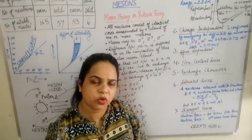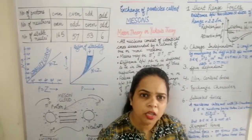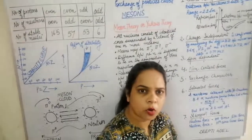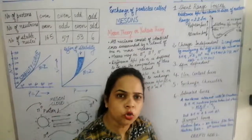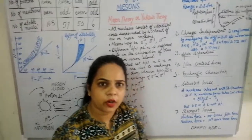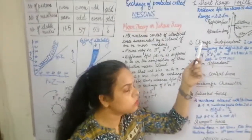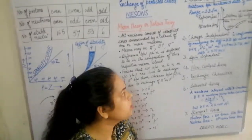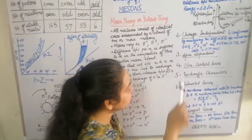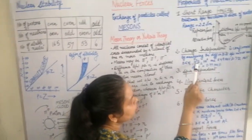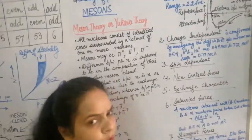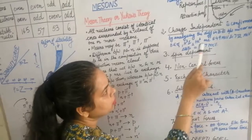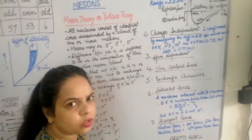Mirror nuclei are nuclei in which the number of protons in one element equals the number of neutrons in the other element, and vice versa. They compared binding energies: the binding energy of tritium (H-3) was found to be 8.49 MeV, and the binding energy of helium-3 (He-3) was found to be 7.72 MeV.